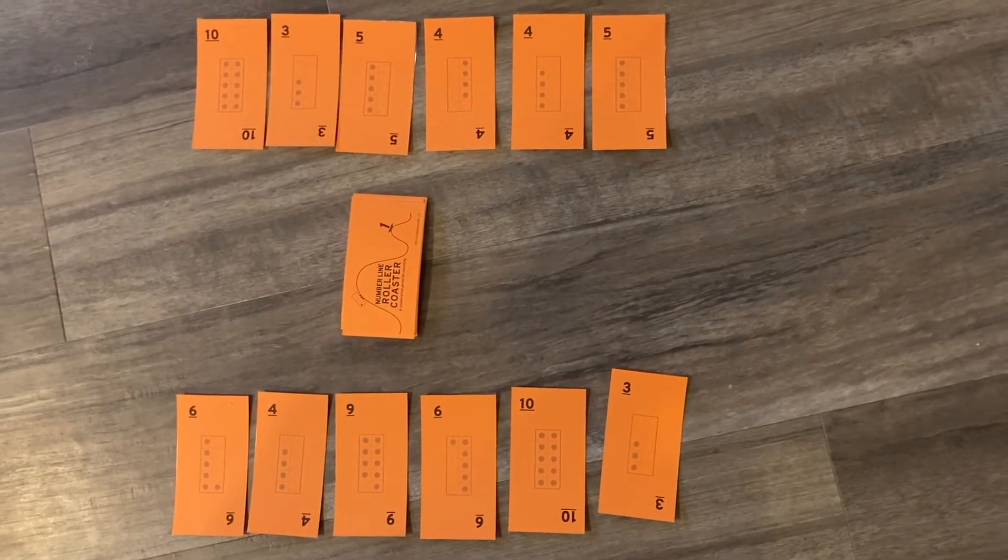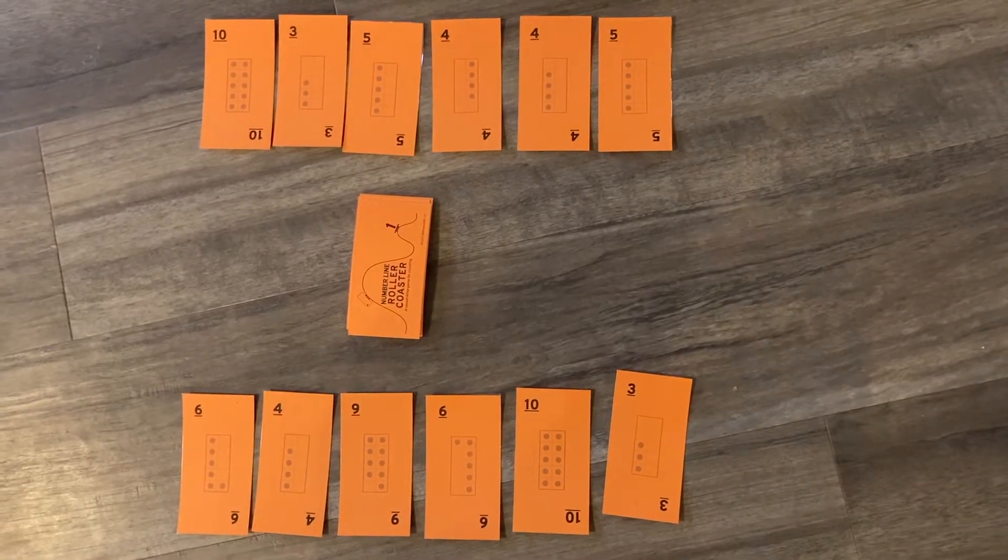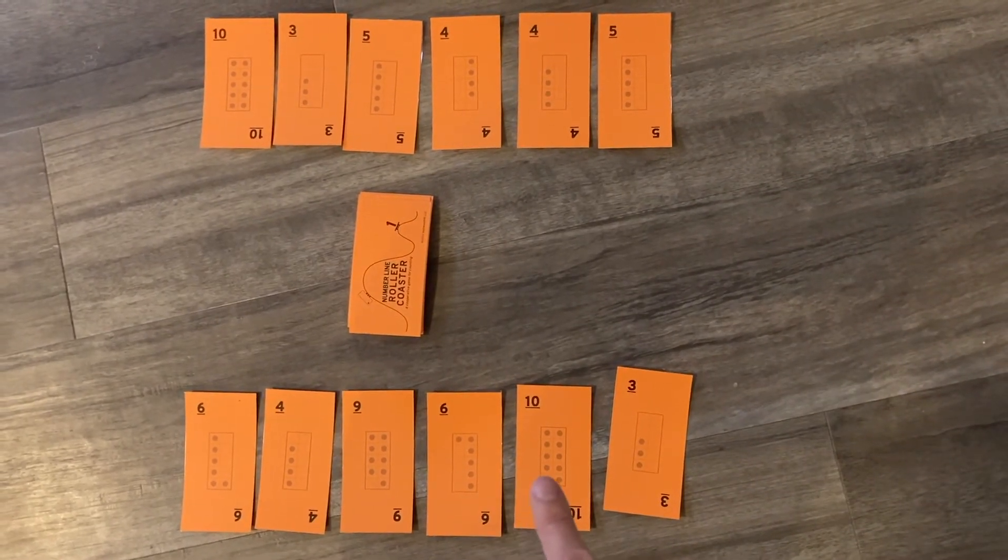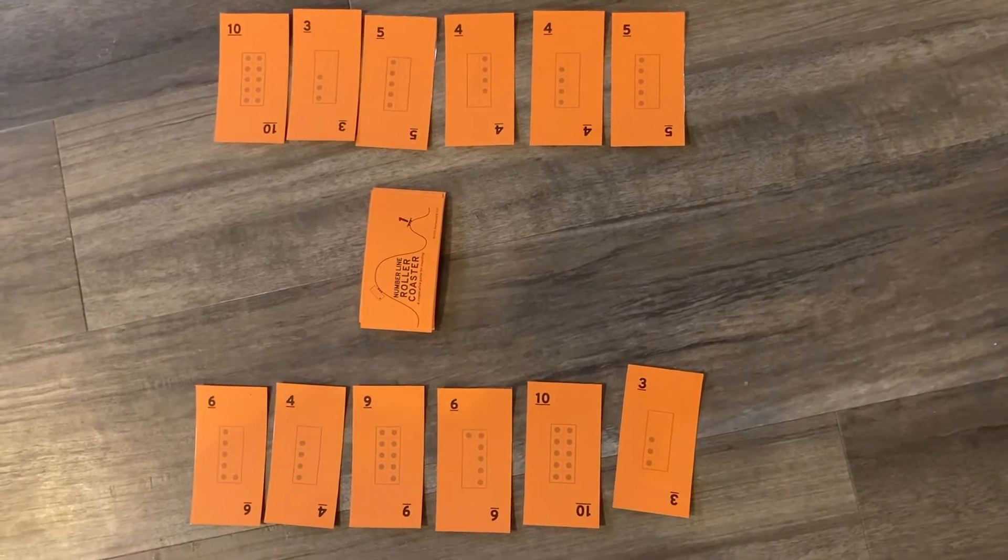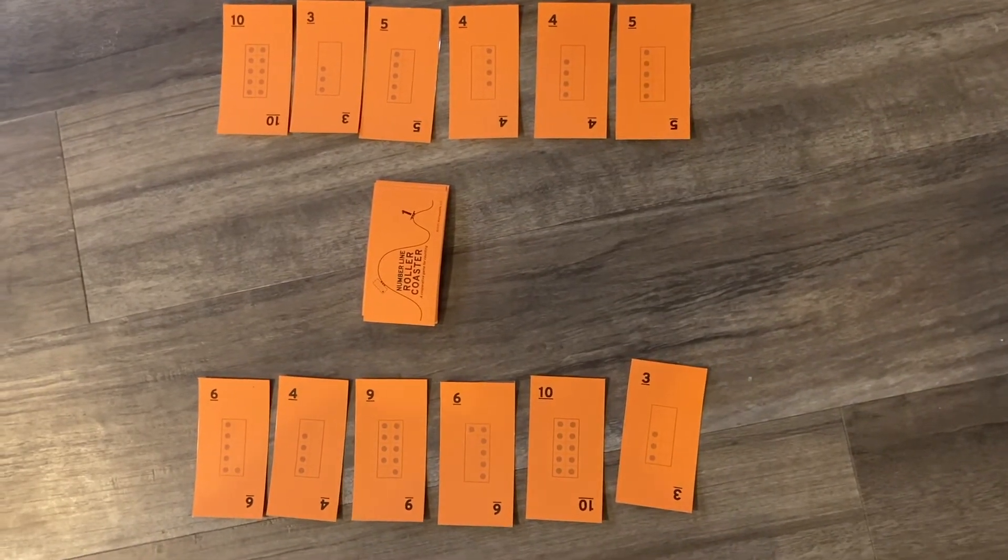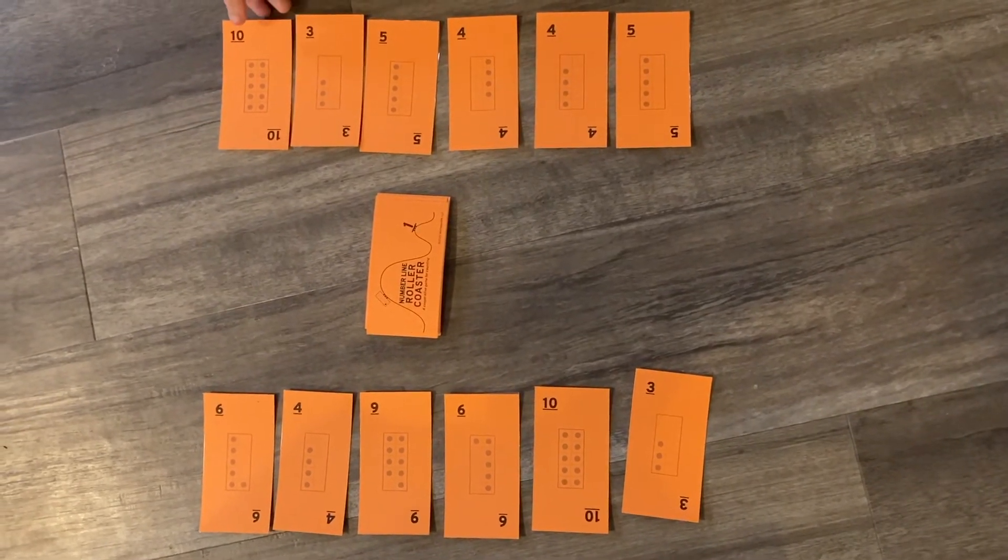You'll notice that in Number Line Roller Coaster, we're counting by ones and this deck has ten frames inside it. Some Number Line Roller Coaster decks have blanks inside, depending on what the kids need.